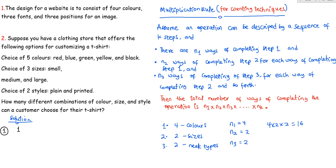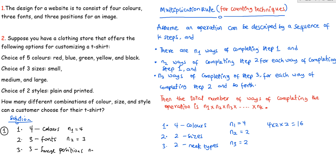For step one, we have four options for colors — four ways of picking colors. For step two, we have three fonts, so three font options. For step three, we have three positions for images. So n1 equals four, n2 equals three, and n3 equals three.